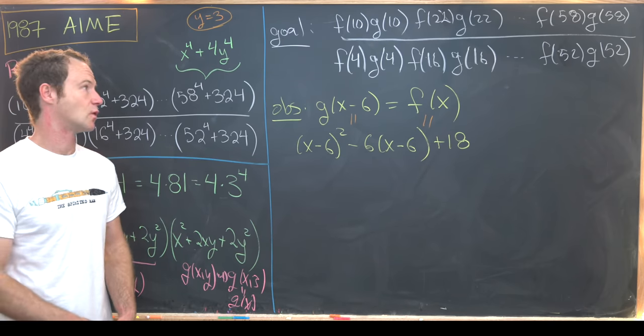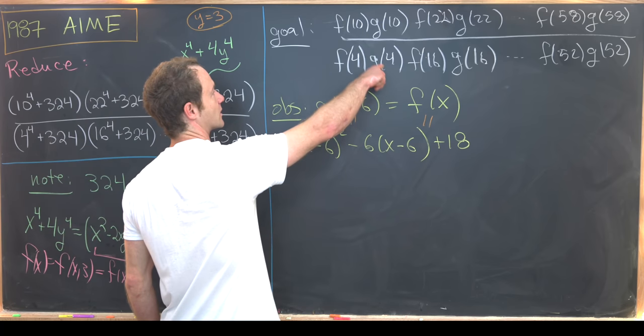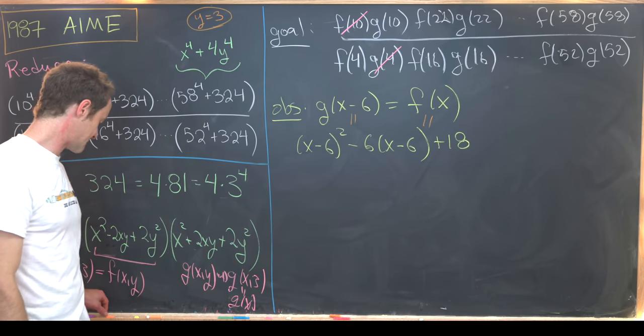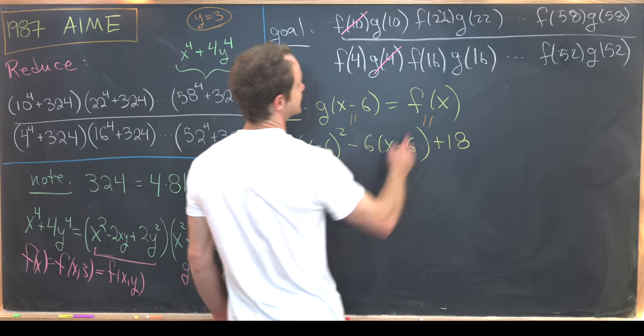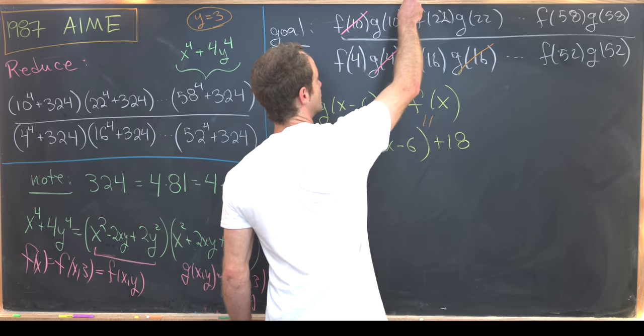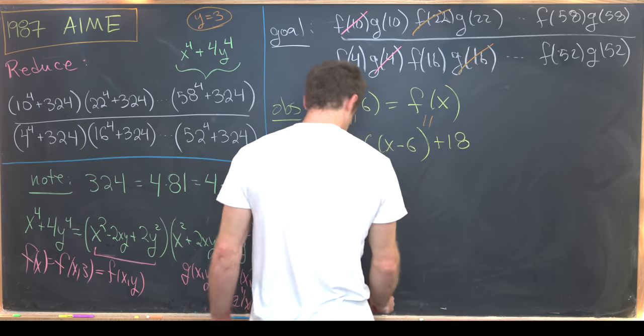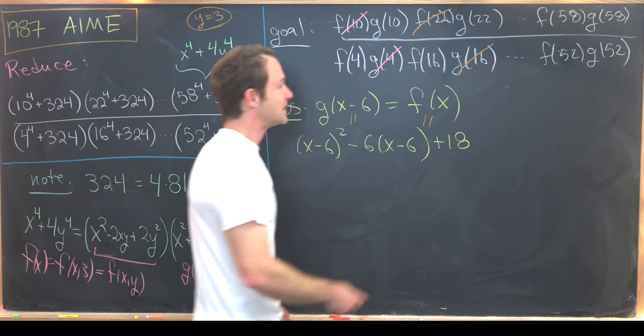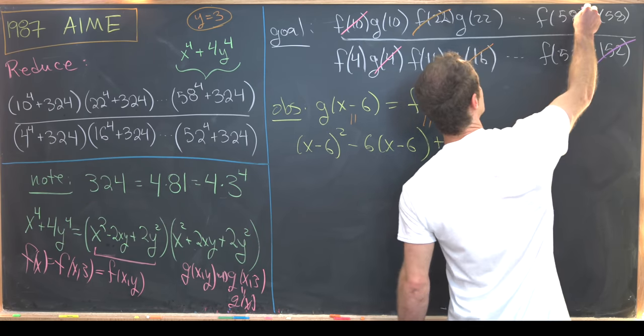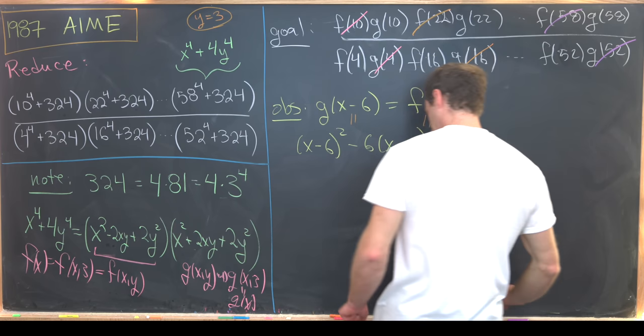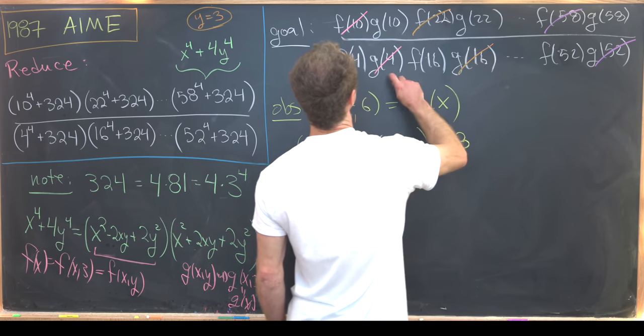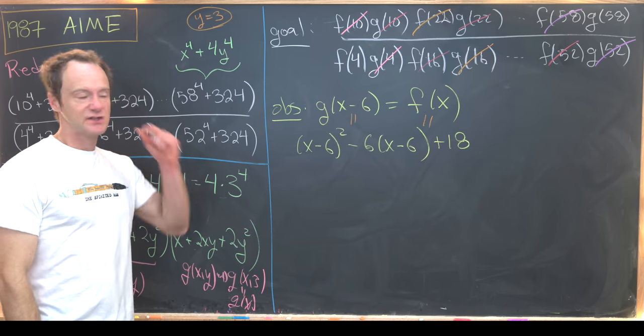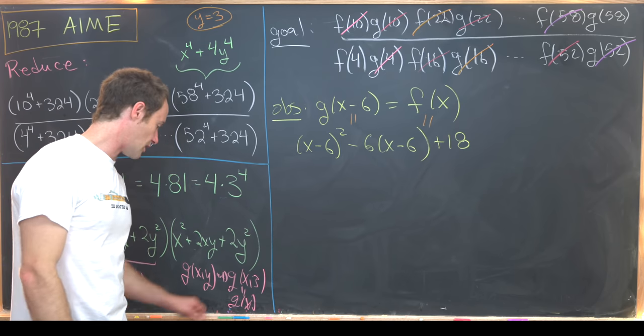Well that actually helps us quite a bit because now that means that g of 4 is the same thing as f of 10, because 4 is equal to 10 minus 6. Likewise, g of 16 is equal to f of 22. And then we can play that whole game all the way down until we see that this g of 52 cancels out with this f of 58. And I should say that all of this stuff in the middle here also cancels with terms that are not written on the board. So let's see what we're left with when all of that is said and done.